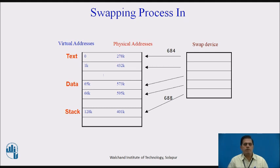Now we will go through the swapping algorithm. In this algorithm, process 0, called the swapper, is the only process that swaps processes into main memory from the swap device. At the conclusion of system initialization, the swapper goes into an infinite loop where its only task is process swapping. The kernel schedules the swapper just as it schedules other processes, but the swapper executes only in kernel mode and uses internal kernel functions rather than system calls.